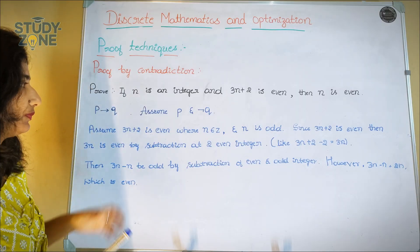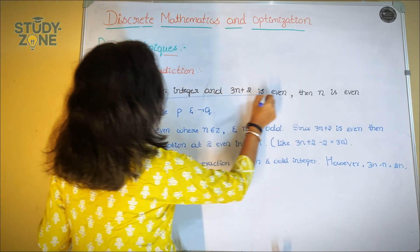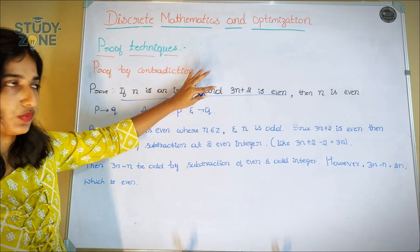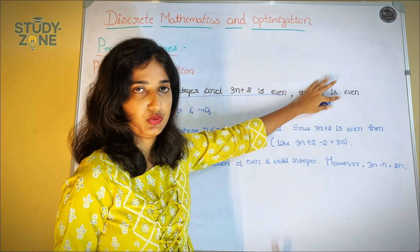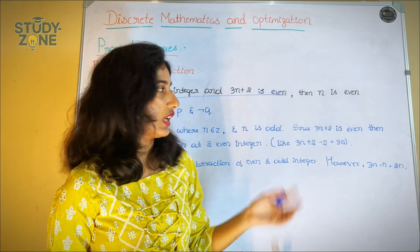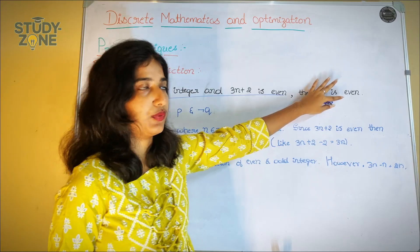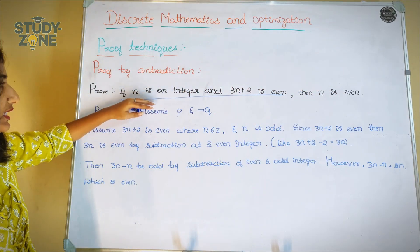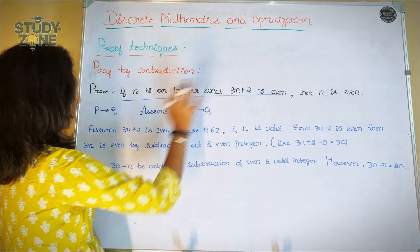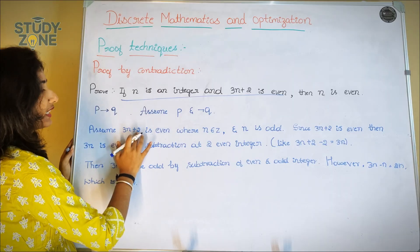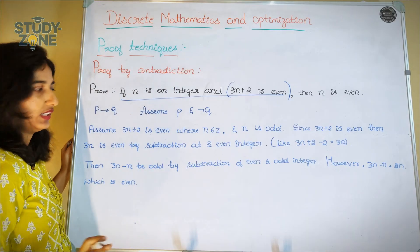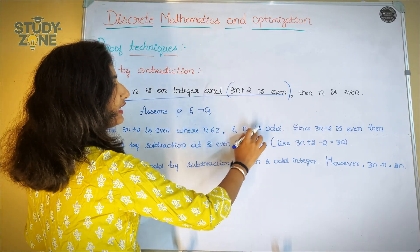So we have to assume — let's take the hypothesis as p and the conclusion as q. We have to assume p is true and then assume negation of q. So p is: n is an integer and 3n plus 2 is even. We assume 3n plus 2 is even, and we take negation q as: n belongs to Z and n is odd.